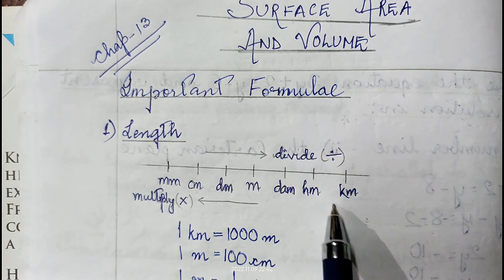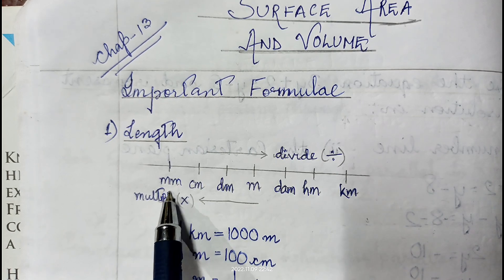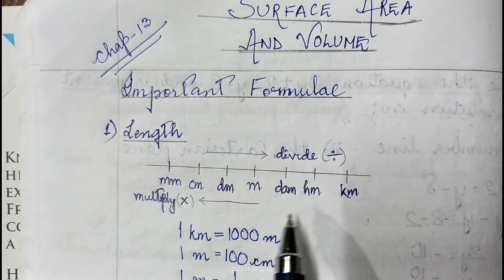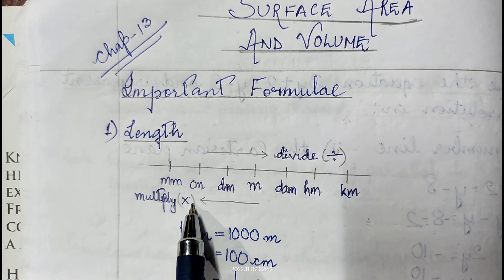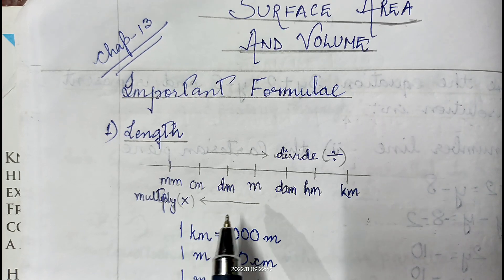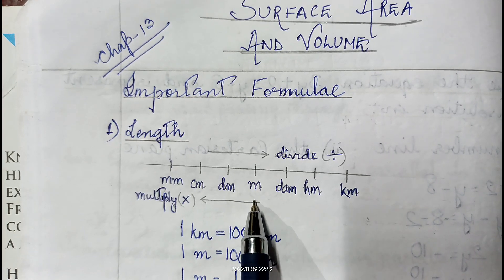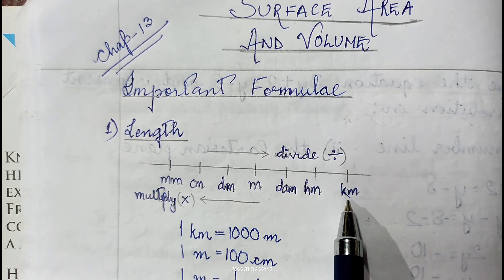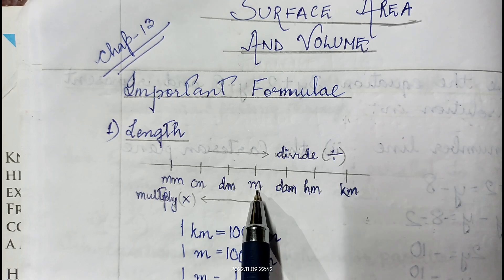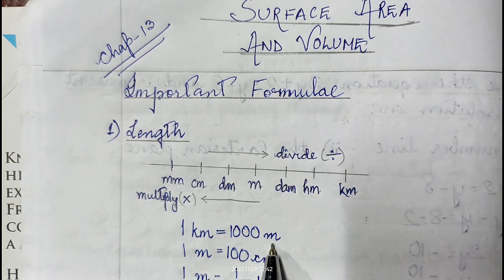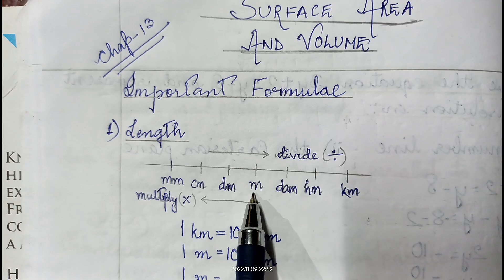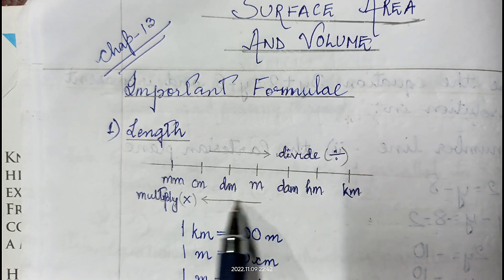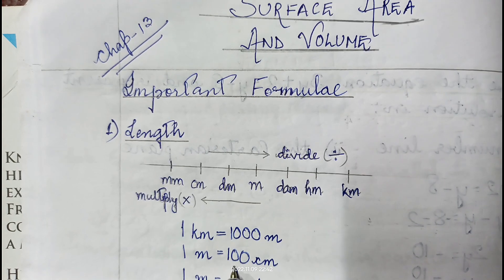This is the biggest unit and this is the smallest. Whenever we go from smallest towards biggest, we have to divide, and if we move from bigger to smaller, we have to multiply. The relation between kilometer and meter: 1 kilometer equals 1000 meters. For meter and centimeter, we move two places, so 1 meter is 100 centimeters.